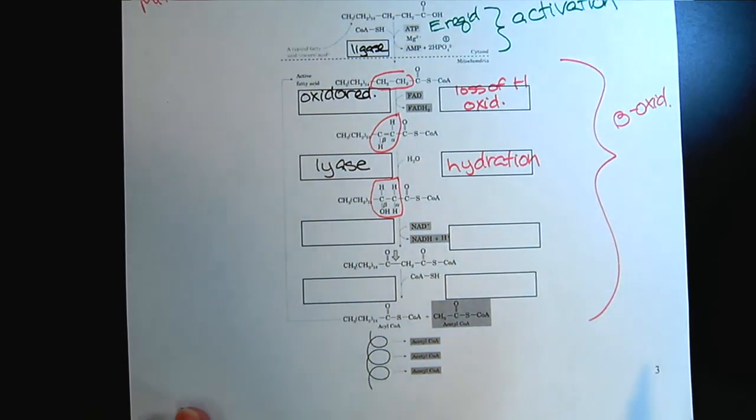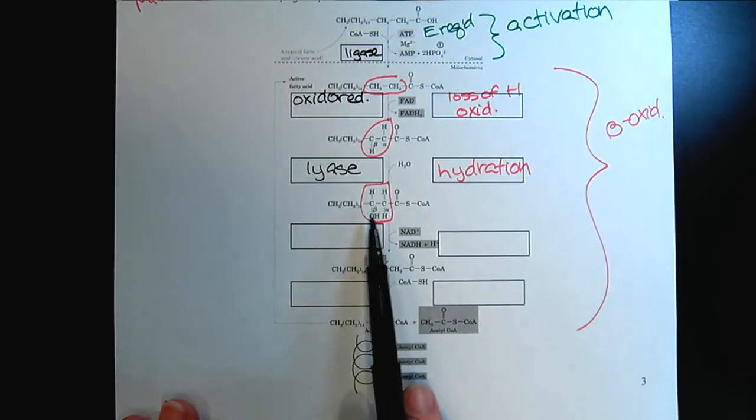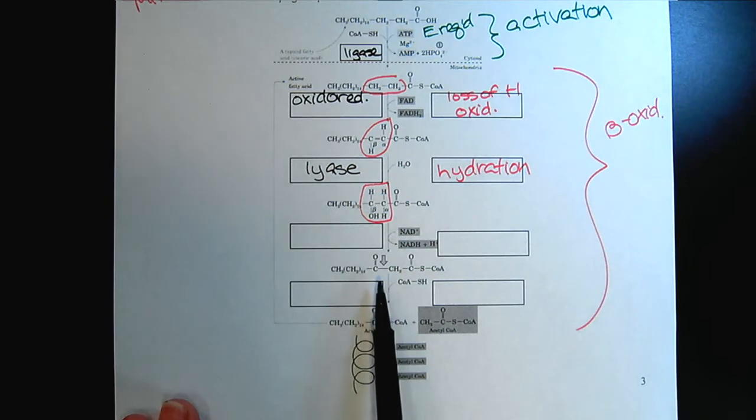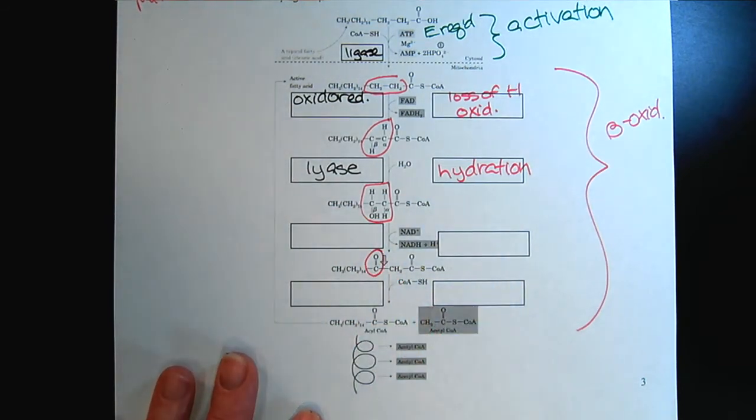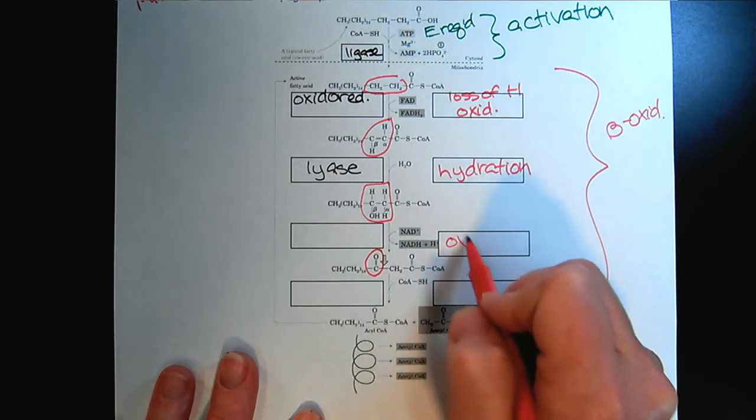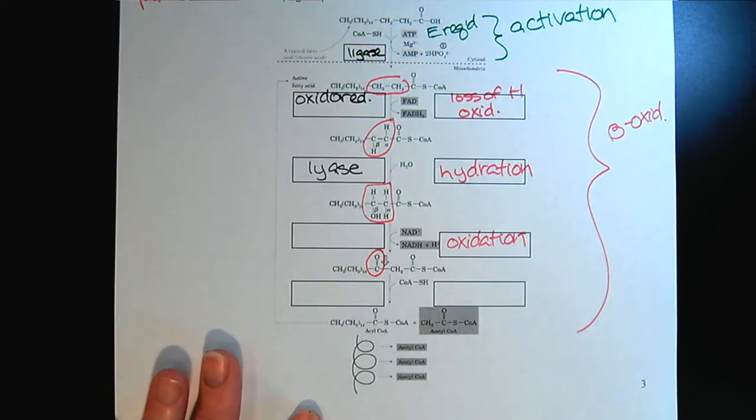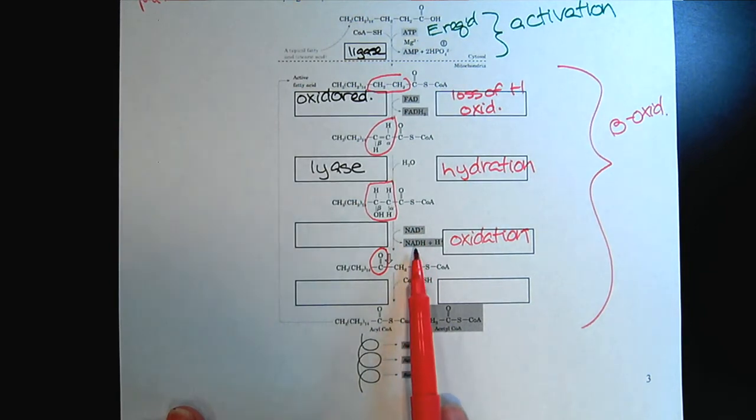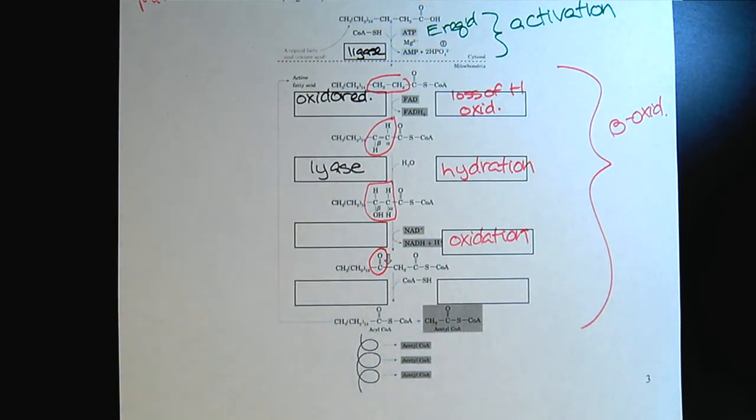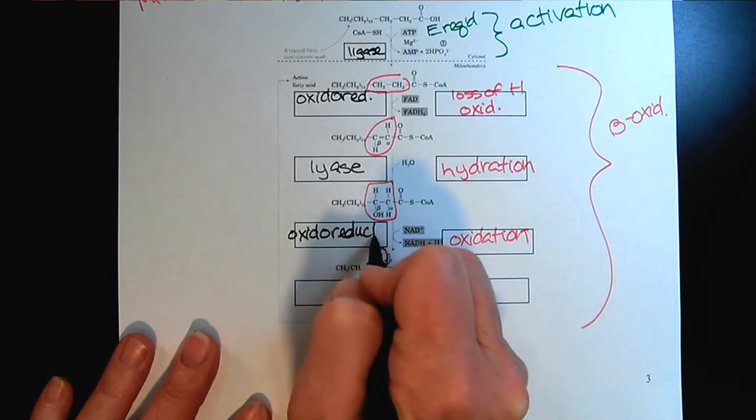What happens in the next step? Here we see on the carbon described as a beta carbon that we have an alcohol. When we look to the product, we see that we now have a ketone. So the substrate has undergone oxidation. And any time we have oxidation, we look around because we know it needs to be complemented with reduction. And sure enough, we see that we have a reduced coenzyme forming. So once again, we're going to need a different oxidoreductase enzyme.